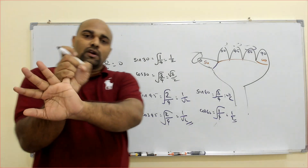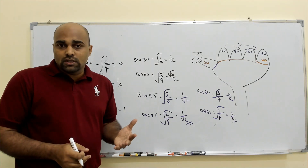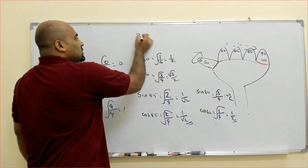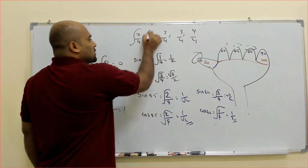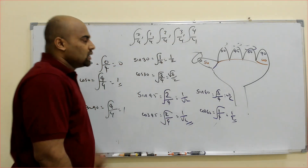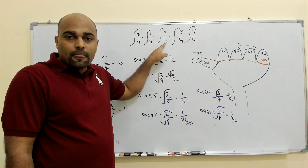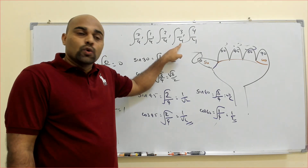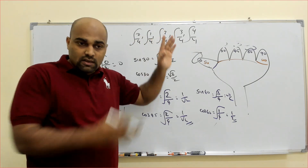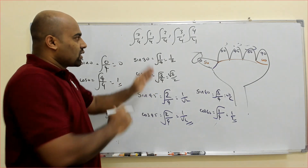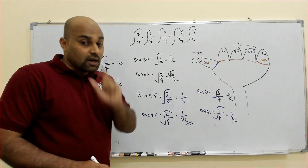For 90: sin side has four fingers, so sin 90 = √(4/4) = 1. Cos side has no finger, so cos 90 = 0. Another method: write 0, 1, 2, 3, 4, divide each by 4 and take the root — that gives sin 0 = 0, sin 30 = 1/2, sin 45 = 1/√2, sin 60 = √3/2, sin 90 = 1. Reversely written, you get the cos values. This is your right hand method.